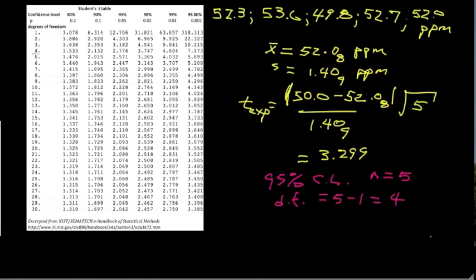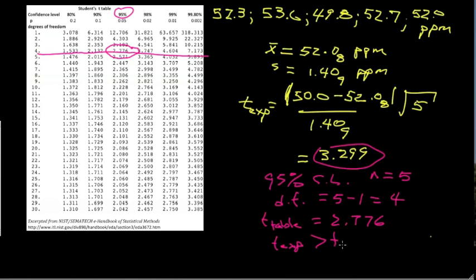We're interested in this row. And the 95% confidence level is this column here. And we see that the value, I've written over it, but it's actually the table value, is 2.776. And we see that the experimental value is greater, t experimental is greater than t table.